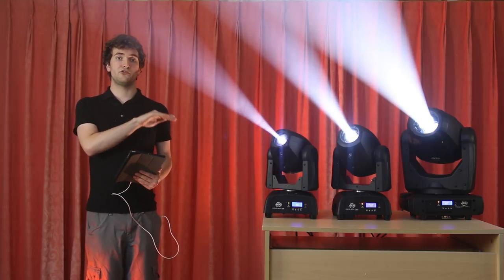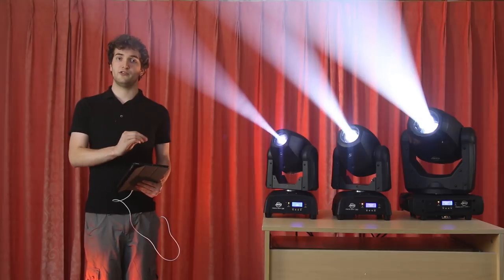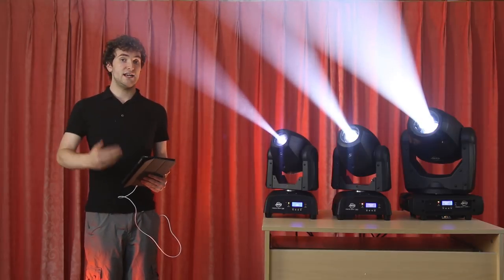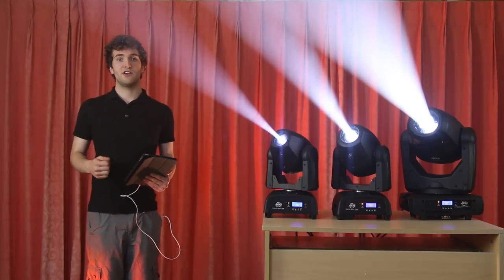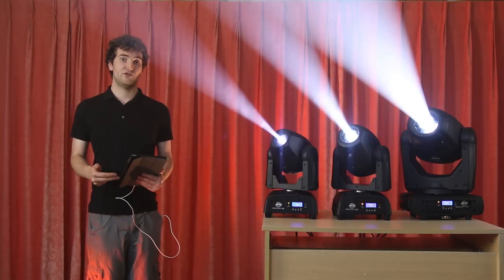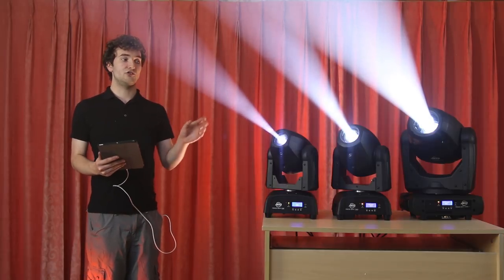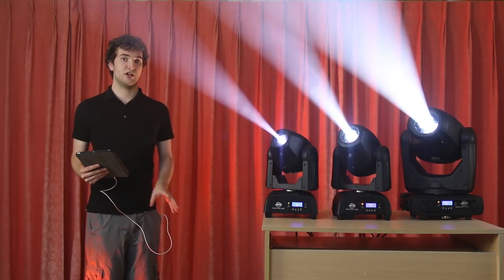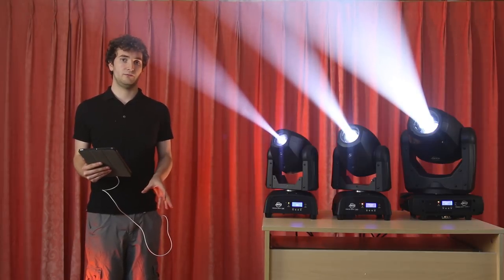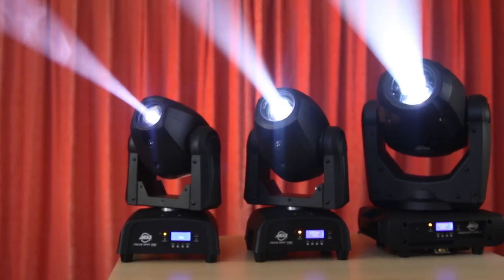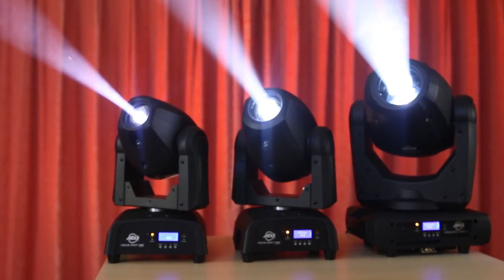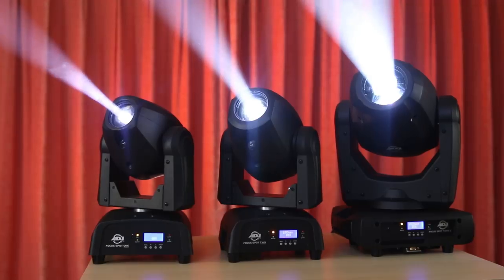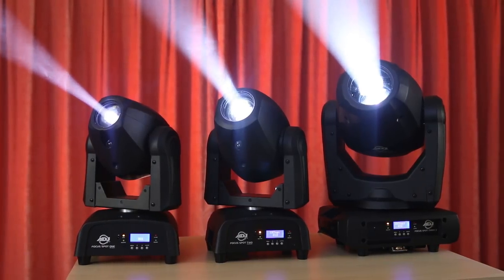However, I still think the FocusBot 2 hits that sweet spot of price versus performance. You get that really bright LED source, you get the separate colour and gobo wheel, and you get a six-facet prism. It's got all the features you really need for a moving head unit, and it comes in at a great price of only around £550. All three units here are great fixtures, and I can highly recommend all of them. However, if you were to ask me which one would I buy, I would go for the FocusBot 2.